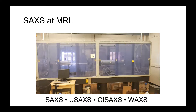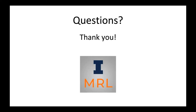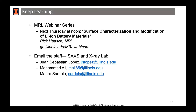The SAXS system we have here at the MRL is our Fonta system — the x-ray source goes through our line, you install your samples, and ultimately it goes to the detector. The system is capable of SAXS, Ultra-SAXS which is a smaller angle SAXS experiment, GSAXS which is a grazing incidence experiment for polymer films or thin films, and WAXS — wide angle x-ray scattering. If you have any questions, please feel free to reach out to me or any of my colleagues here at the MRL.